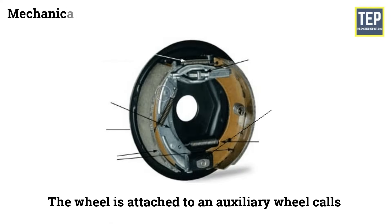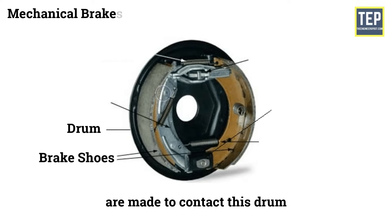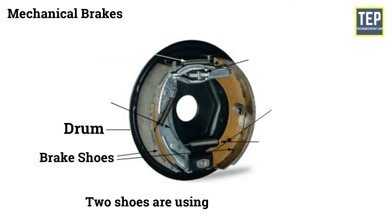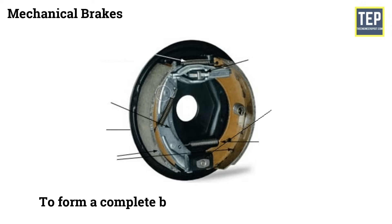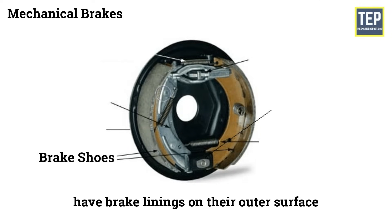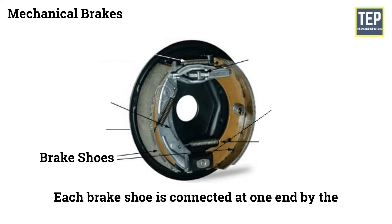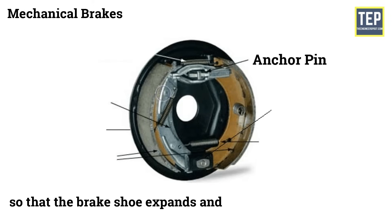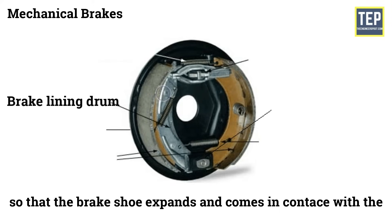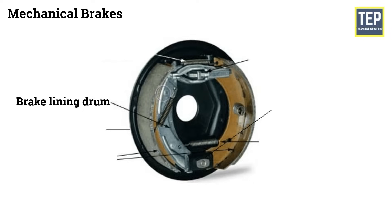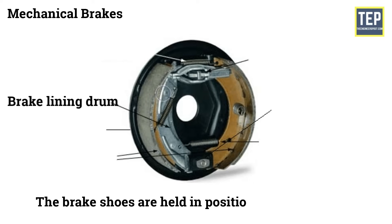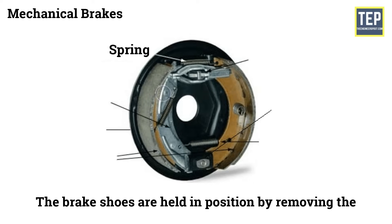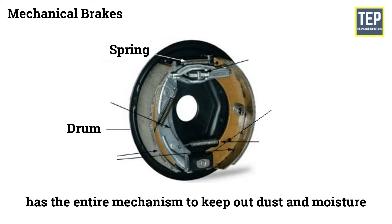Mechanical brake. In a motor vehicle, the wheel is attached to an auxiliary wheel called a drum, and brake shoes are made to contact this drum. In most designs, two shoes are used with each drum to form a complete brake mechanism at each wheel. The brake shoes have brake linings on their outer surface. Each brake shoe is connected at one end by the anchor pin, and the other end is operated so that the brake shoe expands and comes in contact with the brake drum. When the brakes are not applied, the brake shoes are held in position by a return spring. The drum also contains the entire mechanism to keep out dust and moisture.